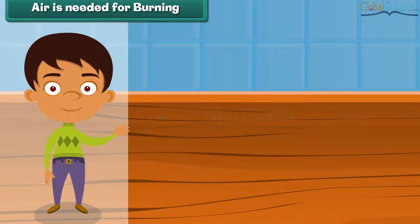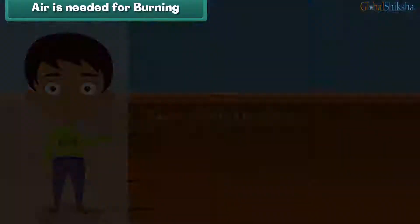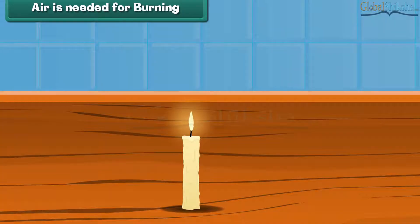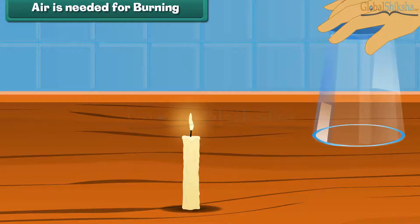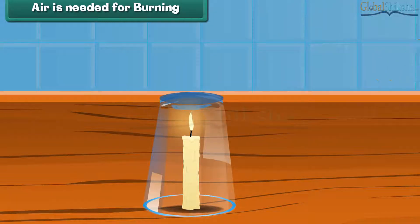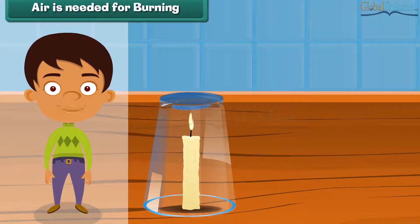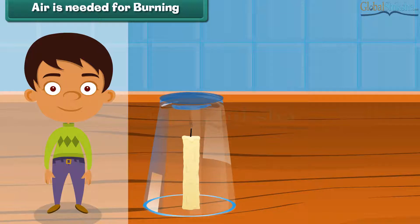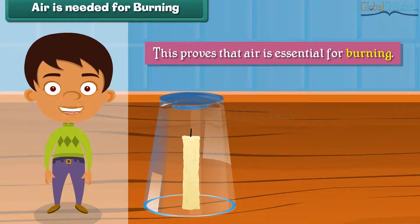Air is needed for burning. Let us perform an experiment. Light a candle, then invert a glass tumbler over it. This action cuts off the air supply to the burning candle. A little while later the candle stops burning. This proves that air is essential for burning.